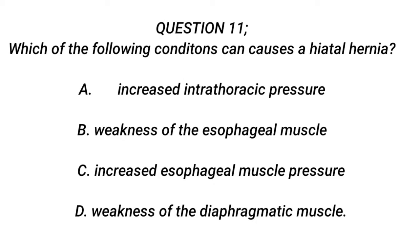Question 11. Which of the following conditions can cause a hiatal hernia? A. Increased intrathoracic pressure. B. Weakness of the esophageal muscle. C. Increased esophageal muscle pressure. D. Weakness of the diaphragmatic muscle.